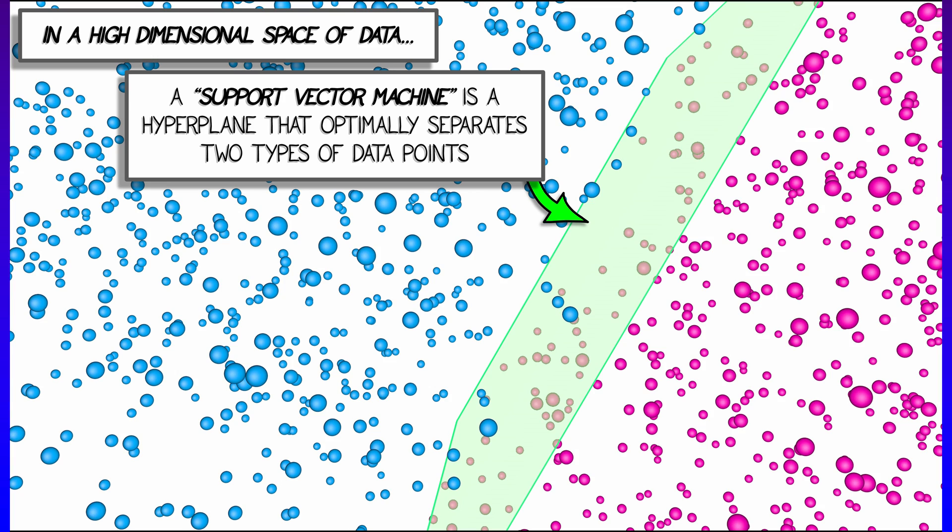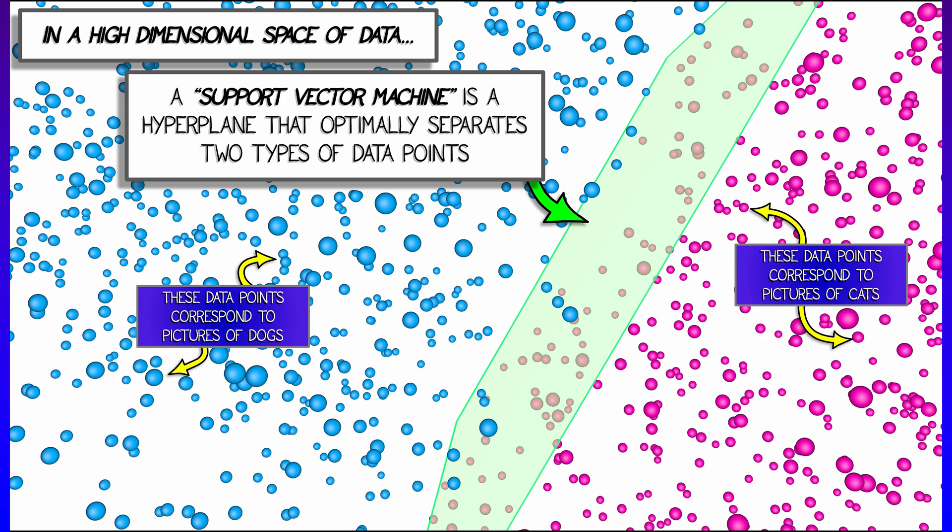So again, let's say you have a bunch of images of dogs and cats on the Internet. And these are each represented as a data point based on the pixels. That's going to be a really high dimensional space. Some of your data points are pictures of dogs. Some of your data points are pictures of cats.